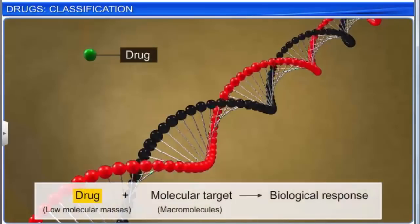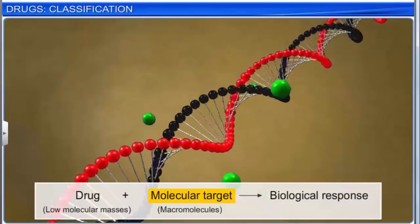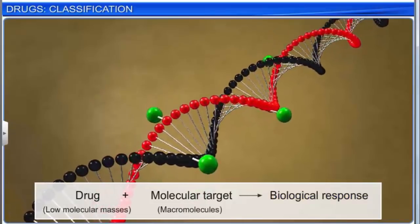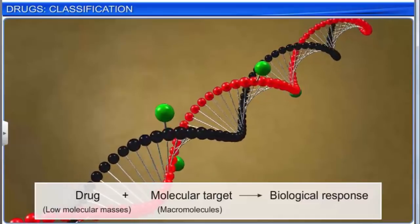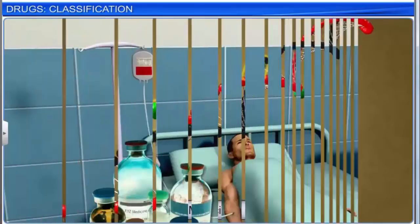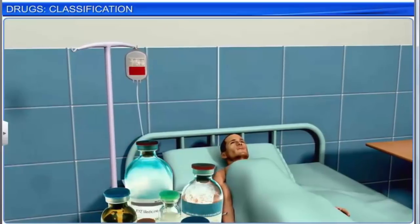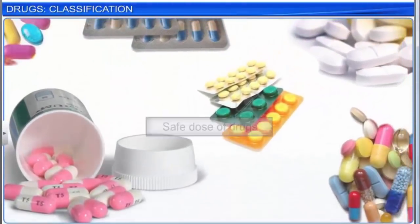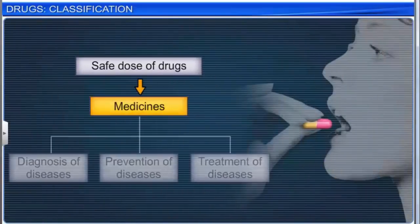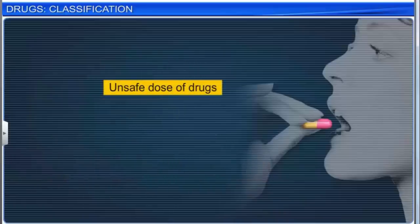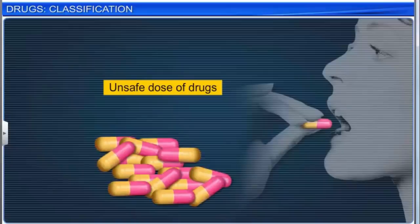Drugs are chemicals of low molecular masses that interact with macromolecular targets and produce a biological response. When the biological response is therapeutic — meaning desired and beneficial — these chemicals are called medicines. The use of chemicals for obtaining a therapeutic effect is called chemotherapy. When drugs are taken in safe doses, they act as medicines and are useful in the diagnosis, prevention, and treatment of diseases. However, when the same drugs are consumed in excess, they act as potential poisons.